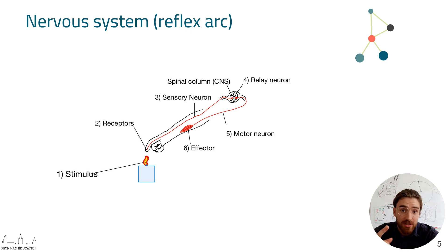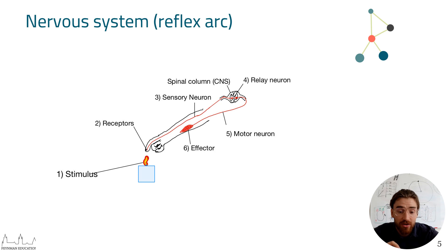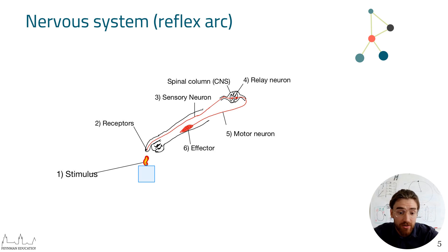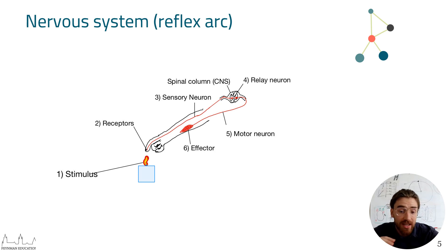Initially we have the stimulus, which is picked up by receptors. The receptors are linked to sensory neurons, which send the signal to the central nervous system — either the brain or the spinal column. The central nervous system then sends signals using relay neurons to the motor neurons, which stimulate the effector.